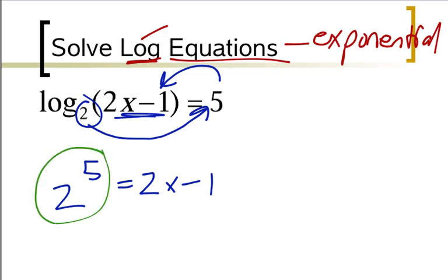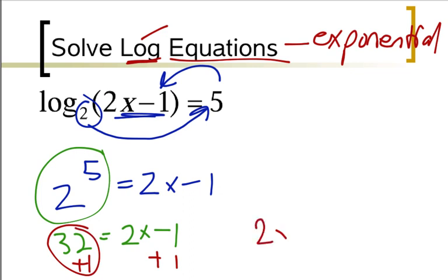I just got to figure out what 2 to the 5th is, and if you do that on your calculator, you should get 32 equals 2x minus 1. Now it's just a quick process of adding 1 to both sides, and that should give you 33, so 2x equals 33, and then divide by 2, and we should get x equals 16.5.